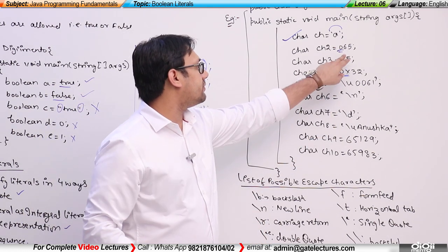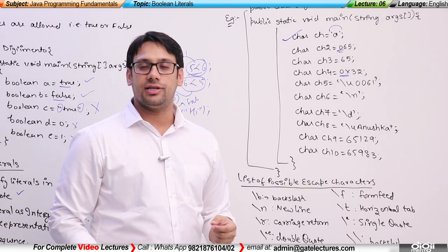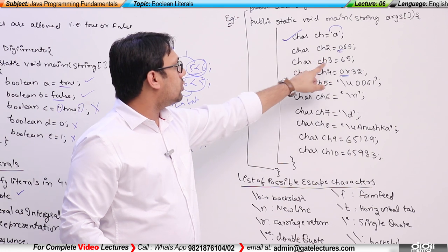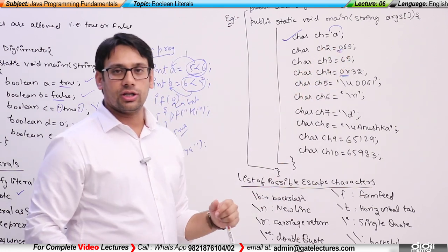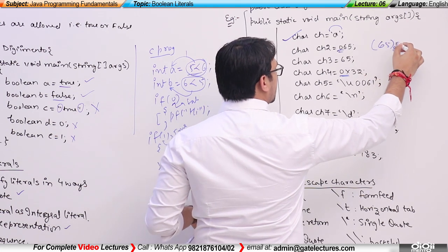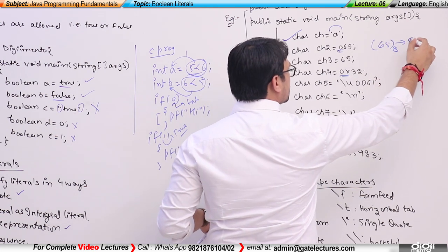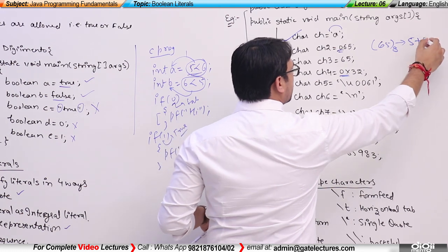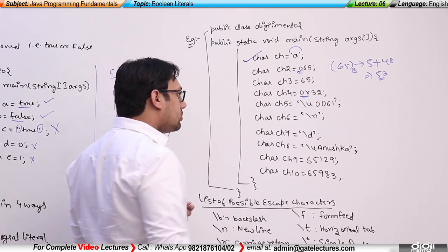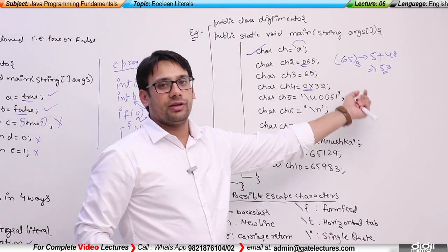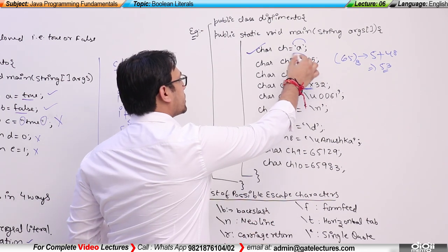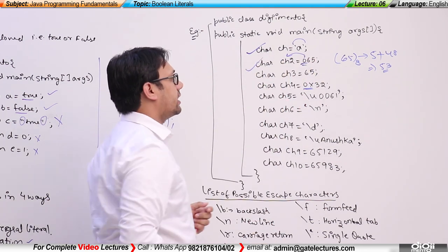For example, the first number we are using is an octal number. We convert this octal number into a decimal number: 65 base 8 converts to 5 plus 48, which equals 53. For this decimal number we will have an equivalent Unicode symbol, and that equivalent Unicode symbol will be stored in the character. So this is also a valid representation.